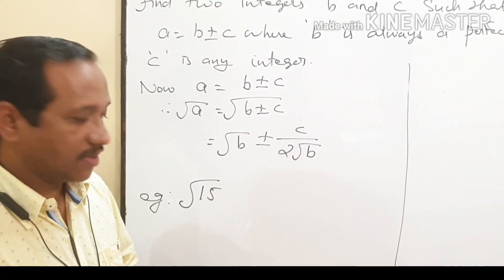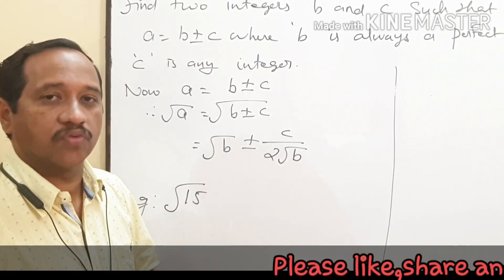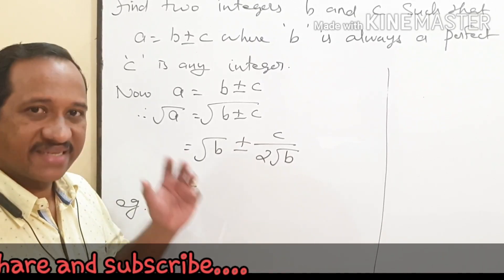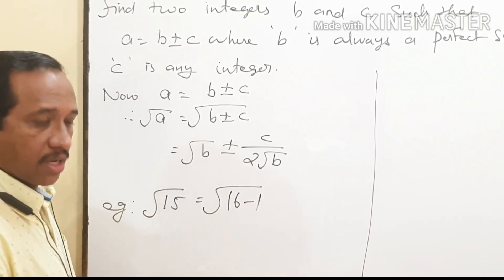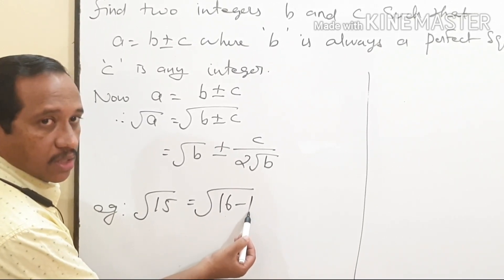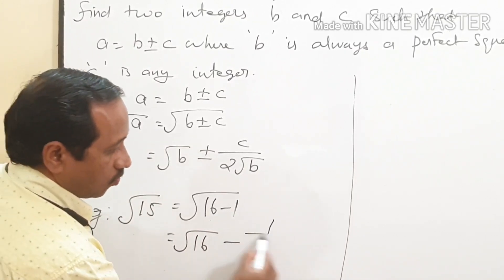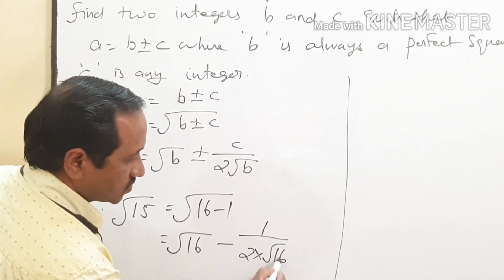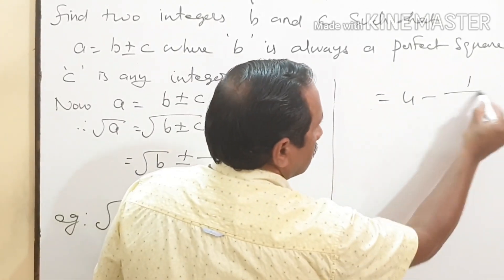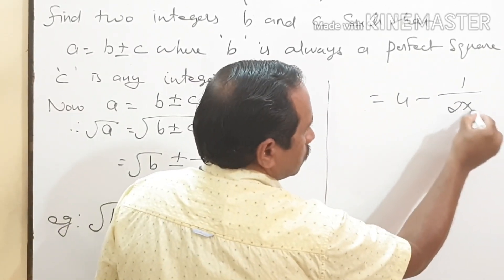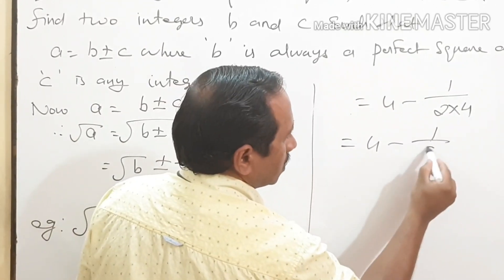Let us consider another example: root of 15. 15 is a non-perfect square. Now I am going to split 15 as a difference of a perfect square and another integer — that is, 16 minus 1. Here, B is equal to 16 and C is equal to 1. Using the formula: root of 16 minus 1, divided by 2 into root of 16. Root of 16 is equal to 4, so it is 4 minus 1 divided by 2 into 4, which gives 4 minus 1 divided by 8.